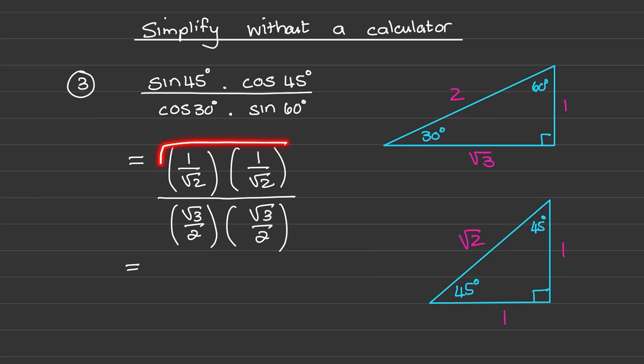First, I will multiply out the fractions in the numerator. So I have 1 times 1 over square root 2 times square root 2, which is equal to 1 half.